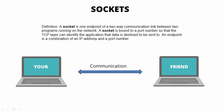According to the books, Google, and official websites, a socket is one endpoint of a two-way communication link between two programs running on the network. A socket is bound to a port number so that the TCP layer can identify the application that data is destined to be sent to. An endpoint is a combination of an IP address and a port number.